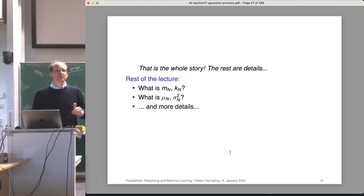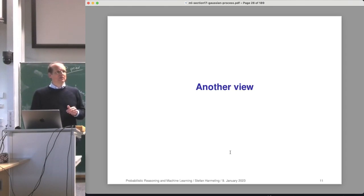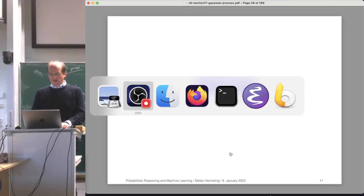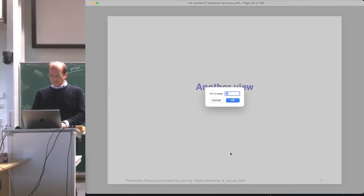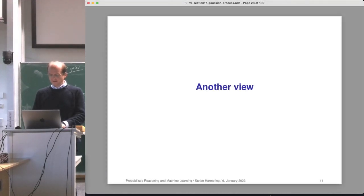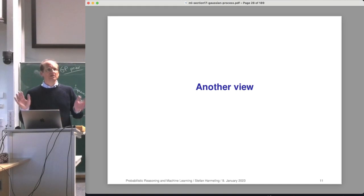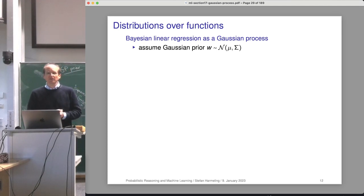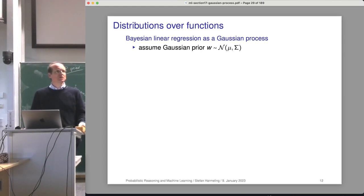Let's start with another view, following the nice book by Carl Rasmussen and Chris Williams — I'll put the PDF link in the chat. It's called 'Gaussian Processes for Machine Learning', available legally as an MIT Press PDF download, and is the super reference for everything on Gaussian processes.